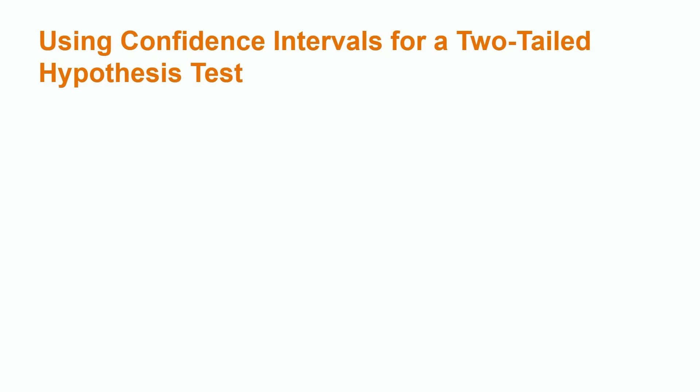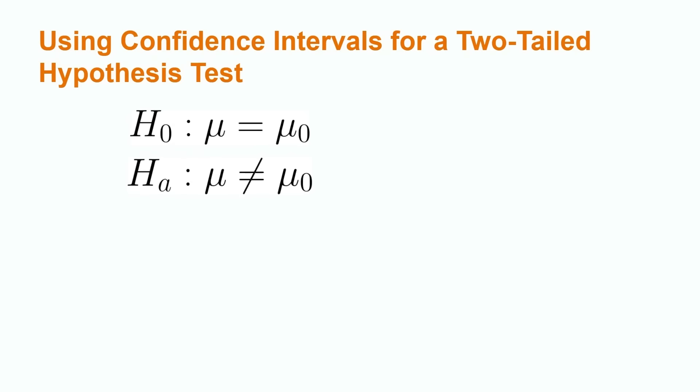Confidence intervals are typically used with two-tailed hypothesis tests because confidence intervals contain both an upper and a lower limit. Recall some of the formulas used for calculating confidence intervals. The formula we will need to use will be dependent on the parameter we are using for our hypothesis test. For example, if we are conducting a hypothesis test using the population proportion as our parameter, be sure to use the confidence interval formula for population proportion.